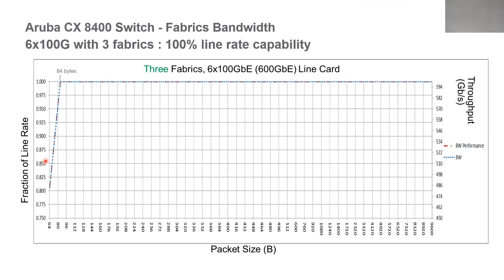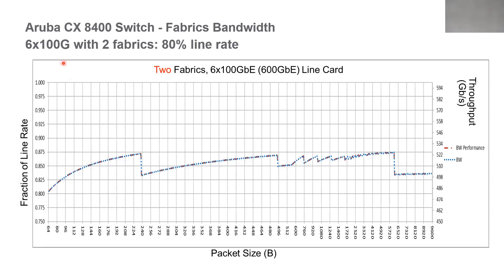When looking at the CX 8400's fabrics and performance, we need to consider the types of line cards being used. Using the six-port 100-gig line card with three fabrics, we're able to get 100% line-rate capacity for packets over 84 bytes. If one of those fabrics fails, the switch would continue passing traffic, but those six-port 100-gig line cards would decrease to about 80% line-rate performance with two fabrics.